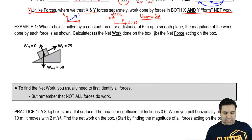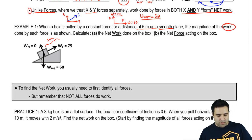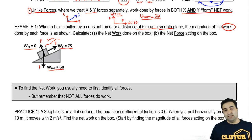So let's try this out. Here's an example. You pull this box with a constant force for a distance of 5 meters up the plane. Smooth, so there's no friction. And the magnitude of the work done by each force is shown below. So the arrow indicates the force, not the work. Work doesn't have direction. But I'm telling you that the work done by normal is 0, the work done by F is 75, and the work done by mg is 60. This is the magnitude of the works.